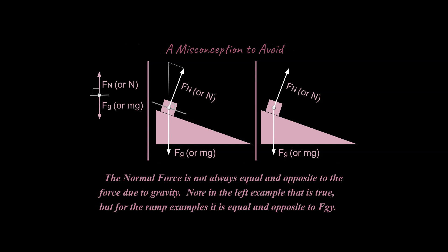And so just to summarize, I want to say the normal force is not always equal and opposite to the force due to gravity. That's a major misconception in physics. Note in the left example, that is true. But for the ramp examples and other examples we'll need to look at, that is not the case.